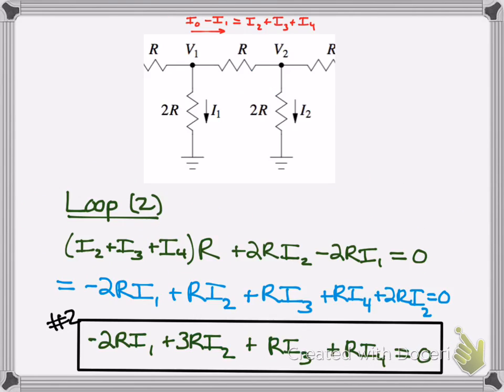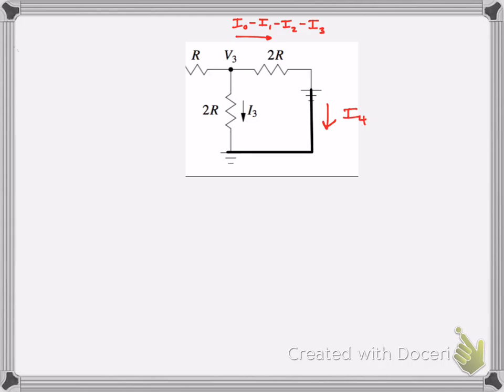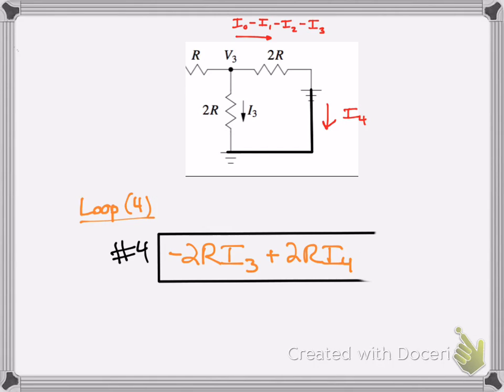So now we still got to do loop 4. So let's go to loop 4. So then we got our current going through here. And we can have our loop 4 is simply I3, which is down there, is coming out that's diverging from the total current. And then we're going to add the voltage drop that's passing through the resistor of 2R. And that has a current of I4 as we defined. And all that is equal to 0.